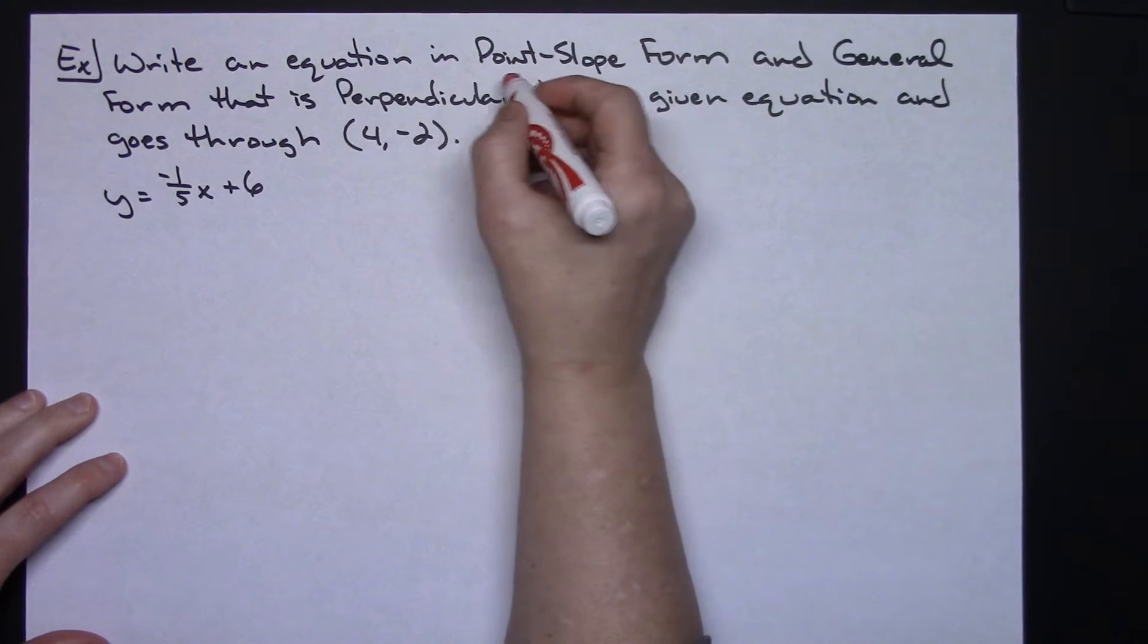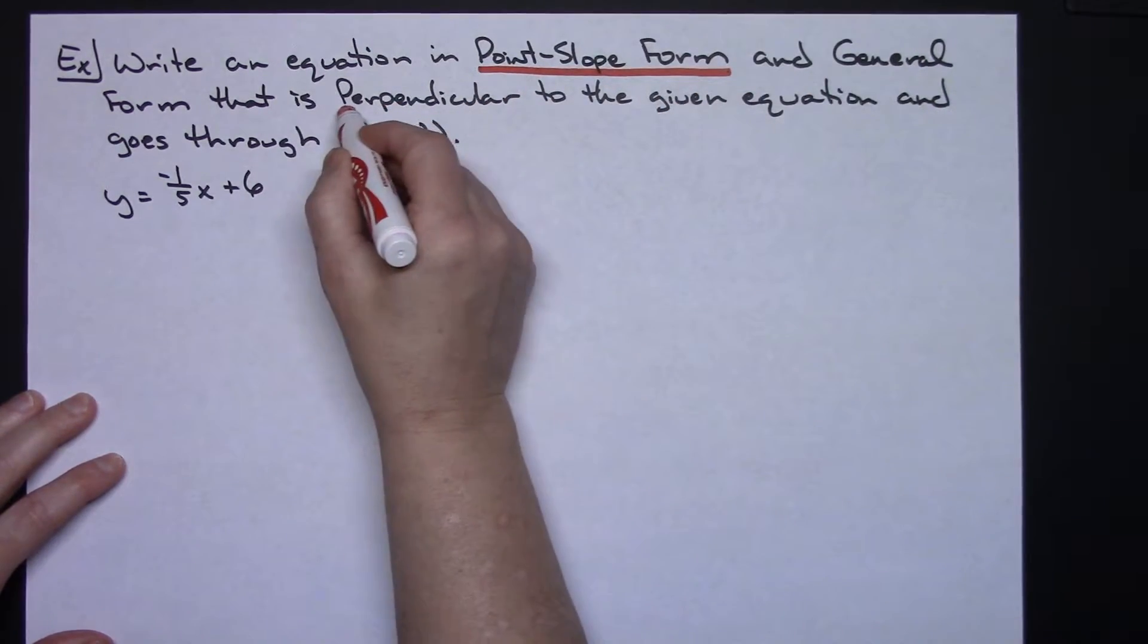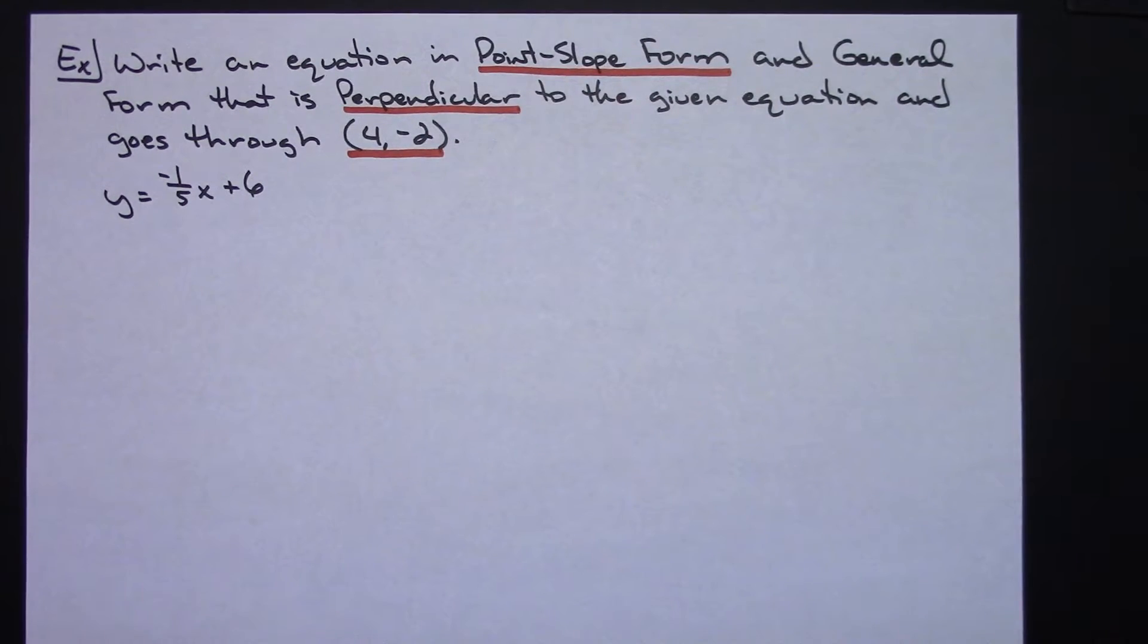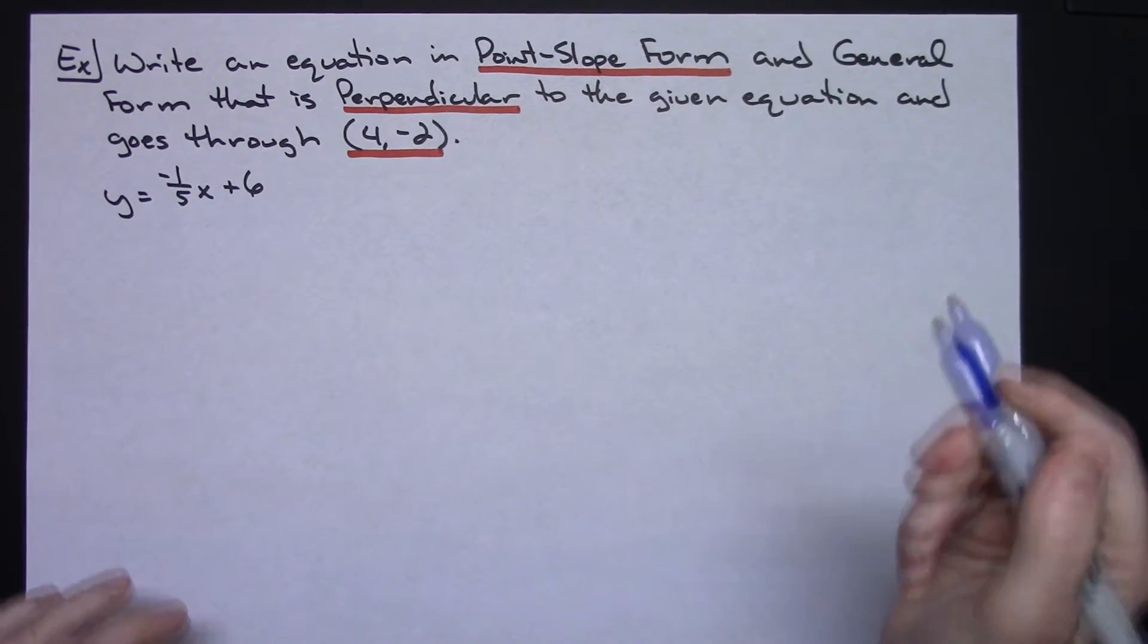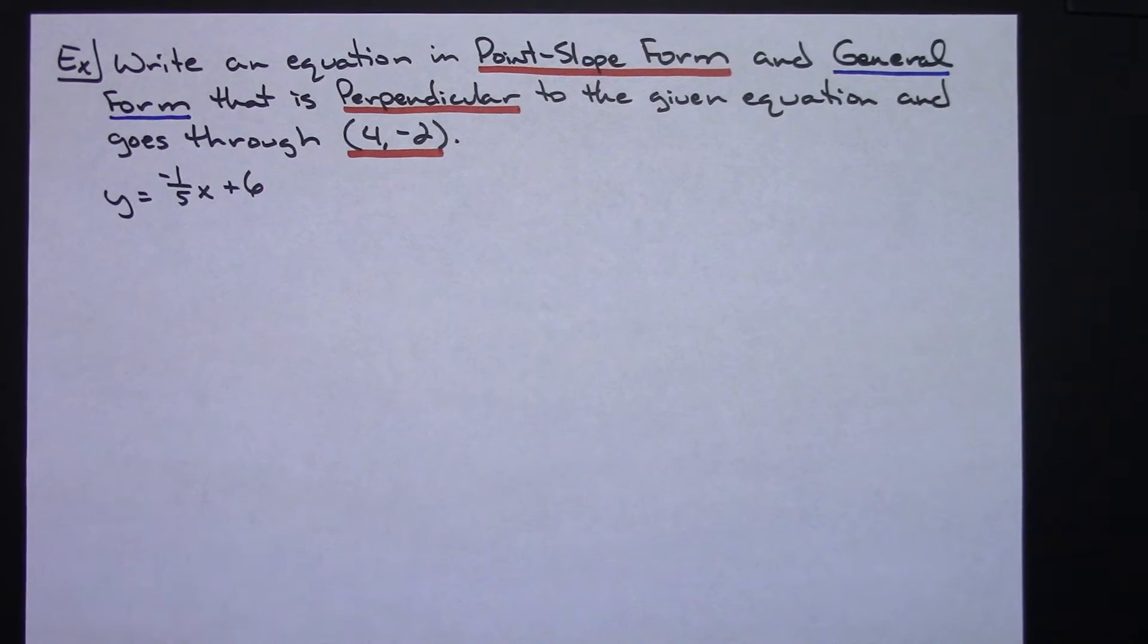Okay, so we need point-slope form, we need perpendicular, and it's got to go through (4, -2). Alright, and then we also need general form, and that'll probably be what we're going to do second.